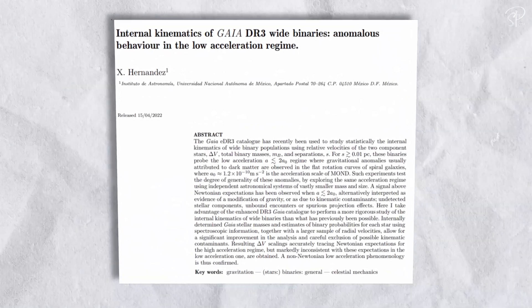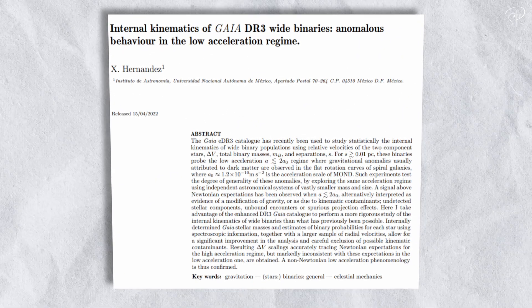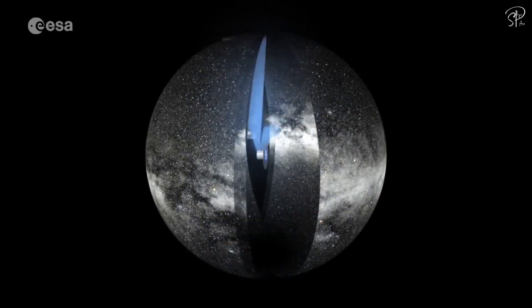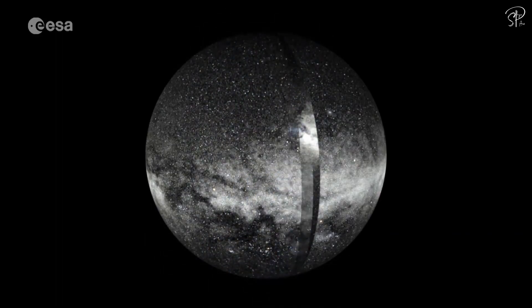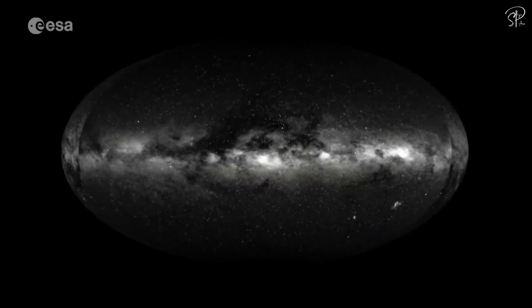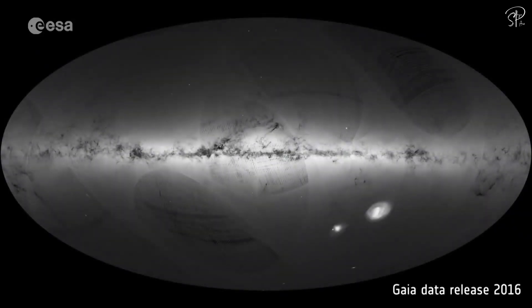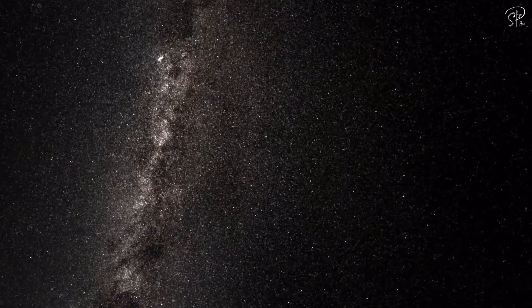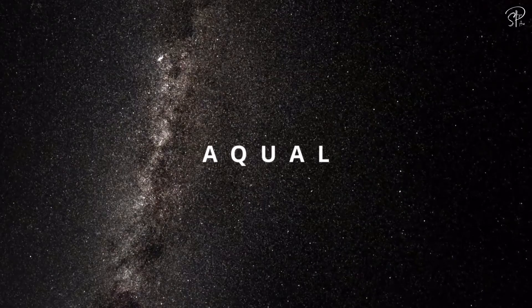Hernandez once again tackled the Gaia's data in 2023, this time with what they claim to be a more rigorous approach. Surprisingly, they found that MOND offered a better fit to the data, specifically a version of MOND known as Aqual. But hold on to your cosmic heads, because there's more to the story.